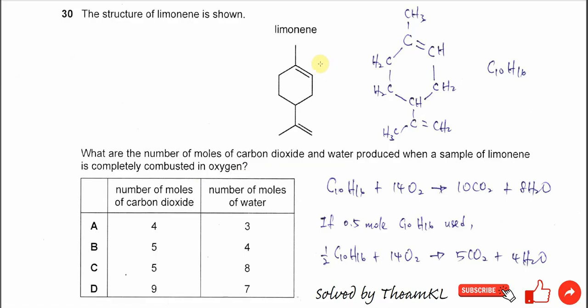So for this one, the total carbon number is 10 carbons: 1, 2, 3, 4, 5, 6, 7, 8, 9, 10.